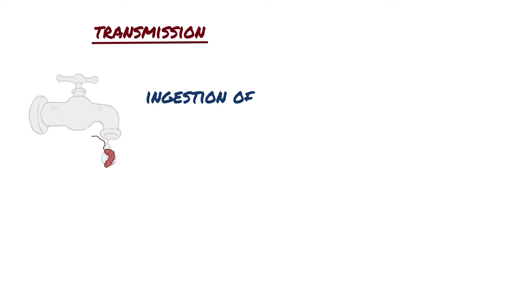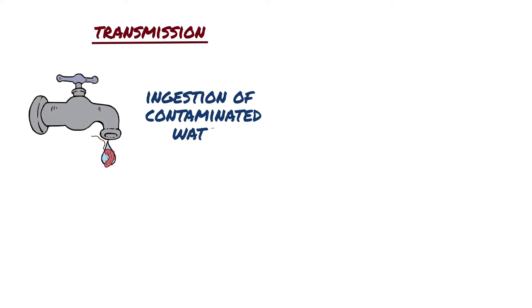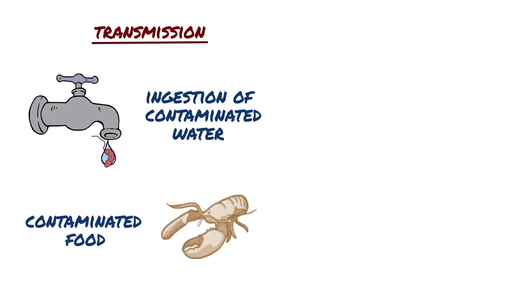How is cholera transmitted and what are some of the risk factors? Cholera is caused by ingestion of contaminated water containing cells of Vibrio cholerae. It can also be contracted from contaminated food, especially improperly cooked shellfish.